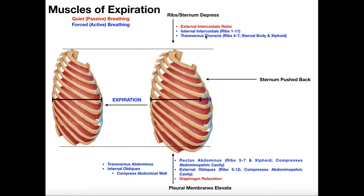Now we have contraction of the internal intercostals, which actually depress ribs one through eleven — pulling those ribs down. There's also a muscle called the transversus thoracis, which depresses ribs four through seven and also pulls the body of the sternum and the xiphoid process downward. By drawing the ribs downward and the sternum, that also causes the sternum to be pushed posteriorly by default. The rectus abdominis — the washboard muscle — depresses ribs five through seven and also pulls the xiphoid process of the sternum down.